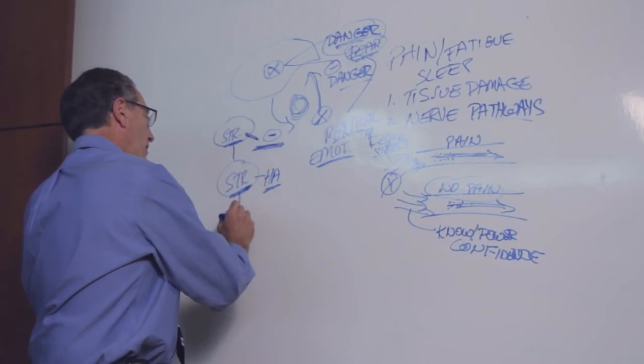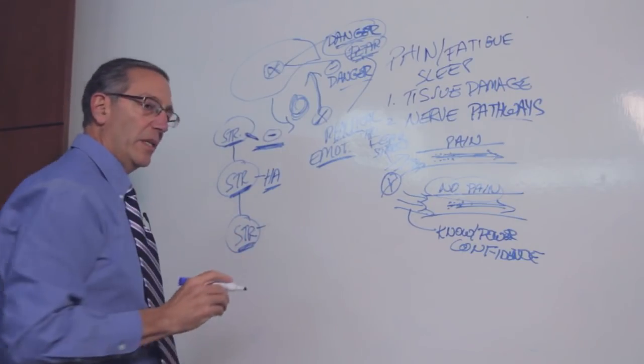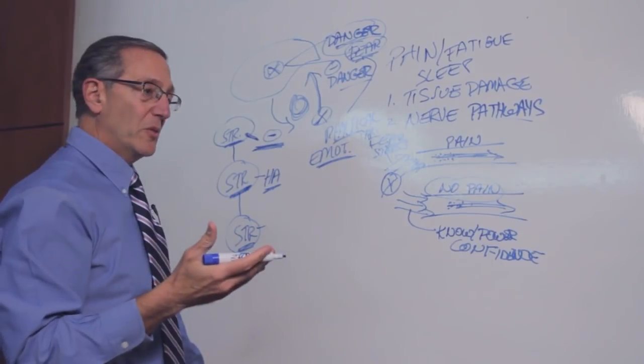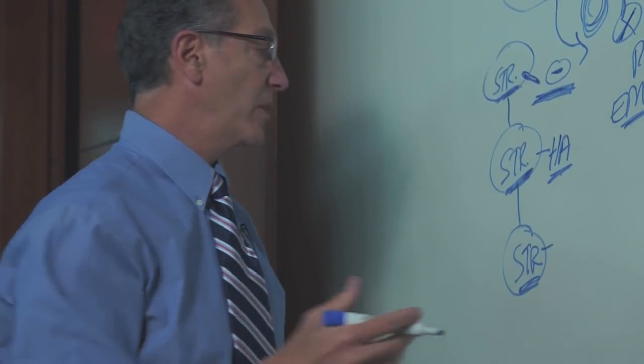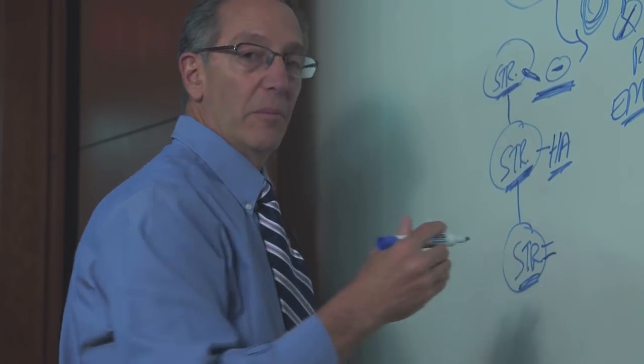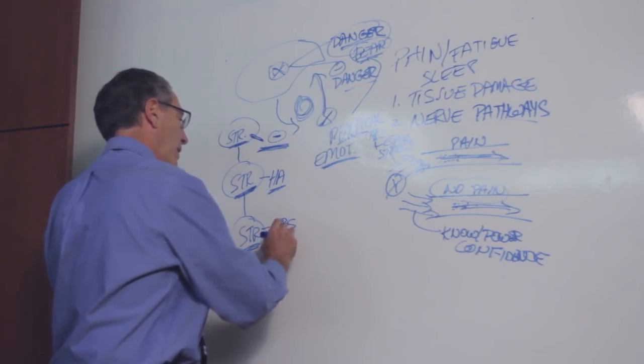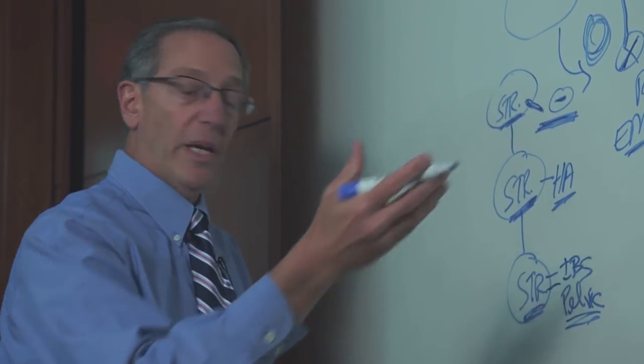And then later in life, other stresses may occur. She may marry somebody who's also emotionally abusive or cheating on her or she's worried about him harming her children. And then at that point, new pathways begin to form: pathways of irritable bowel syndrome, pathways of pelvic pain, or a variety of other painful nerve pathways.